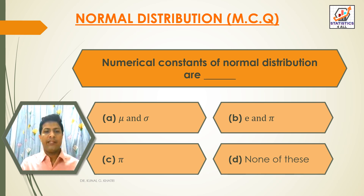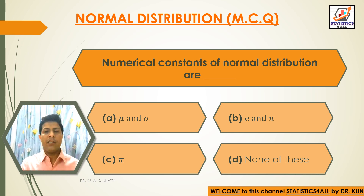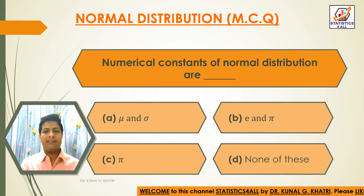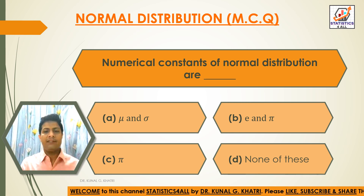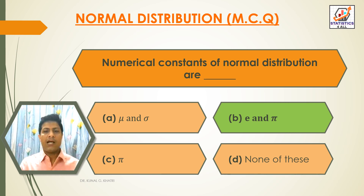Next question: Numerical constants of normal distribution are — Option A: sigma. Option B: E and pi. Option C: pi. Option D: none of these. The answer is Option B — E and pi. The numerical constants of normal distribution are E and pi.